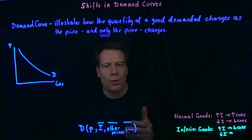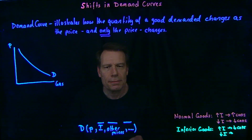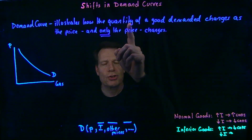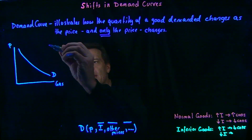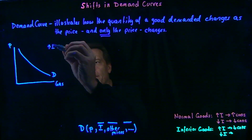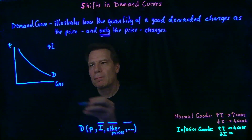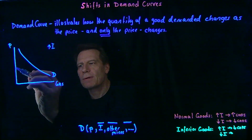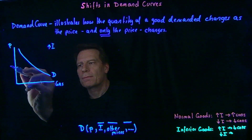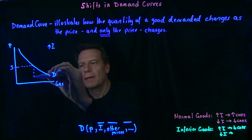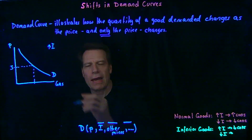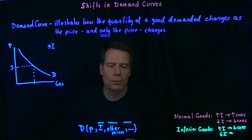But what if one of those things changes? Well, in those cases demand curves might shift. Think, for example, about an increase in income. At your current income, suppose you face a price of $3 per gallon for gasoline, and your current demand curve tells you how much gasoline you're going to consume per week.